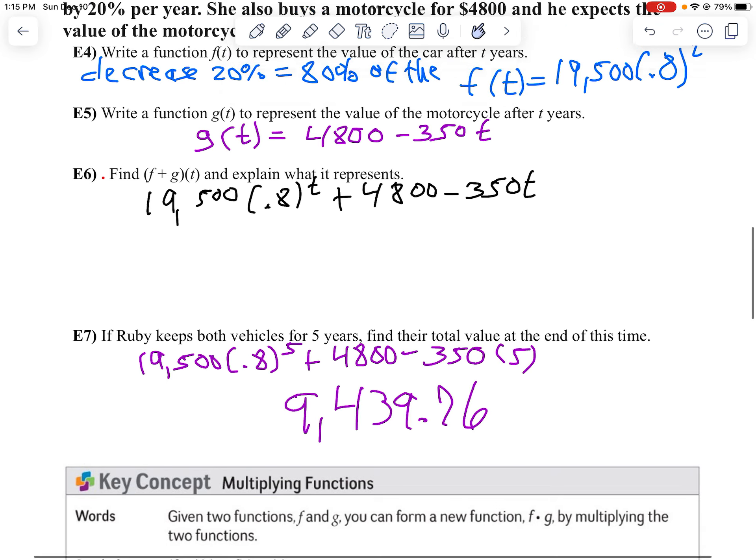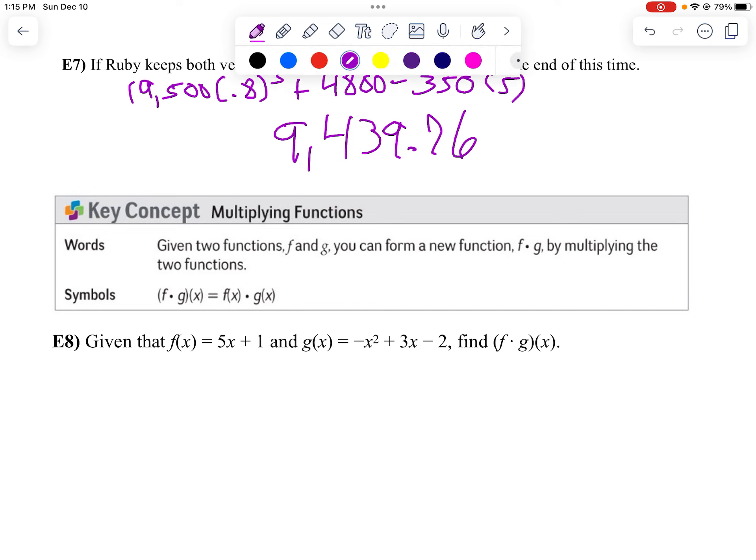Now when we multiply functions, pretty much the same thing, except we're going to probably use the distributive property. So when I multiply two functions, I just multiply each function together. So on this particular problem, I want to find f of g of x, which is the same thing as f of x times g of x. In other words, f of x is 5x plus 1.